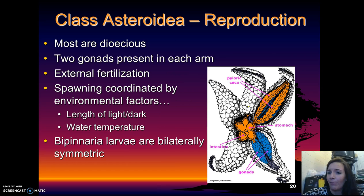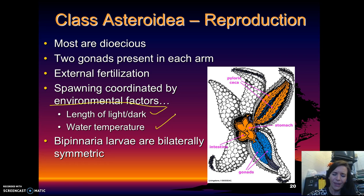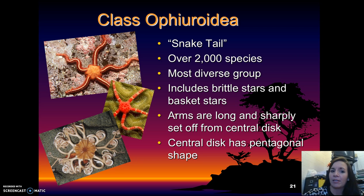In terms of reproduction, they are mostly dioecious, and there are two gonads in each arm. They have external fertilization coordinated by several environmental factors such as the length of light and dark and the temperature of the water. The bipinnaria larvae are usually bilaterally symmetric and don't become pentaradial until they're adults.